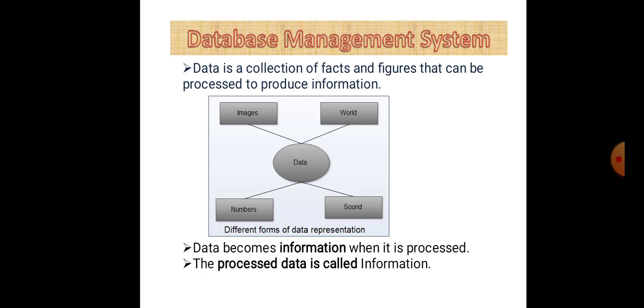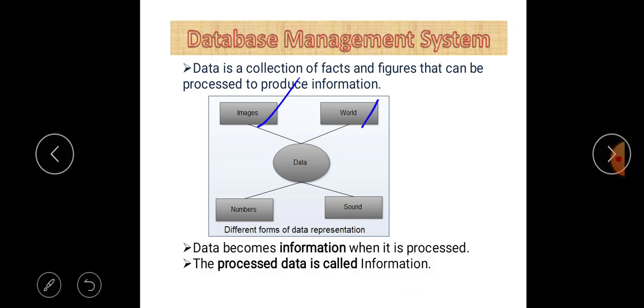We already studied the definition of data and information in Computer Fundamentals, which is Unit 1. Data is basically raw facts, figures, and statistics which we insert into a computer system. Data may be an image, a word, numbers, or a sound. Information is processed data — whatever we get after the processing of data is called information.